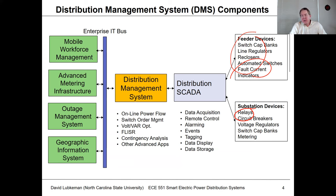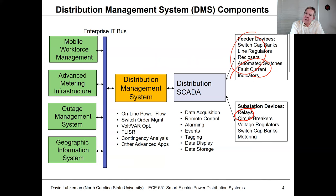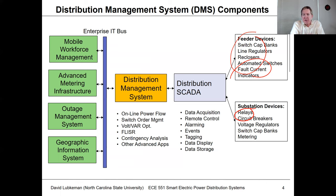Distribution management takes the information stored in SCADA, combines it with a model of the circuit — the same type of model used to build up a circuit and do things like online power flows — to give you an indication of what the voltages are throughout the network. This is also called state estimation. If you need to do a reconfiguration, you'd use a switch order management algorithm. You'd also have volt-var optimization and FLISR — basically how to respond to an outage.